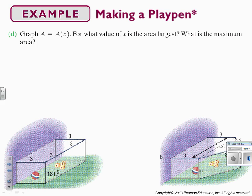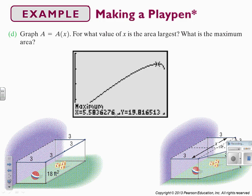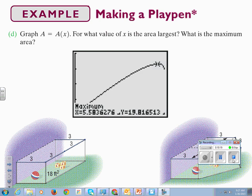Now we graph the function on our graphing calculator to find which value of x makes the area the largest. We find that the maximum happens at x equals 5.6, giving a maximum area of approximately 19.82 square feet.